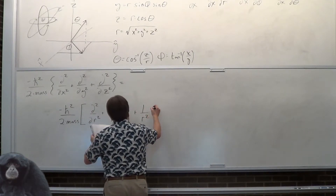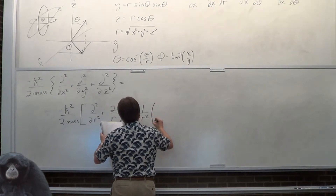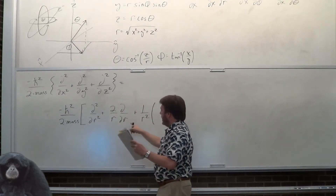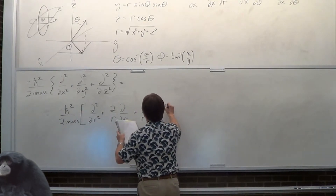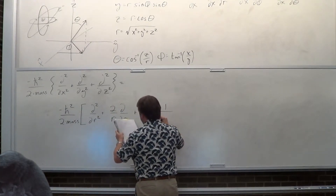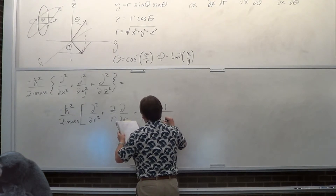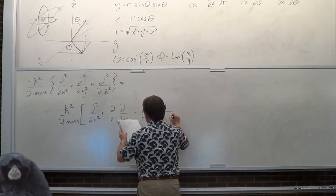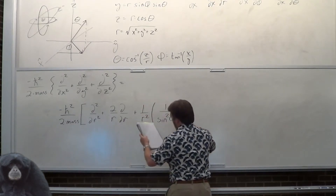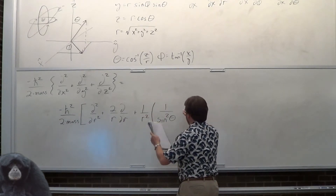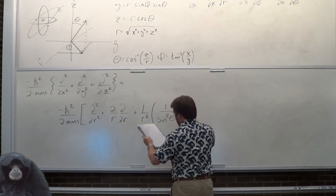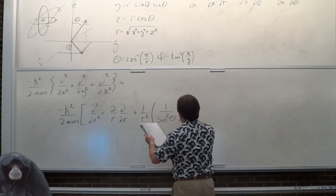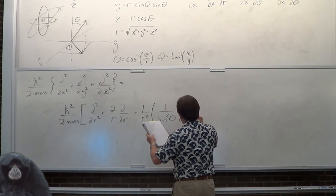There's an R squared term. The R's will go away once we invoke rigid rotor — but when it's not a rigid rotor, meaning we're doing the hydrogen atom, those terms will still be there.